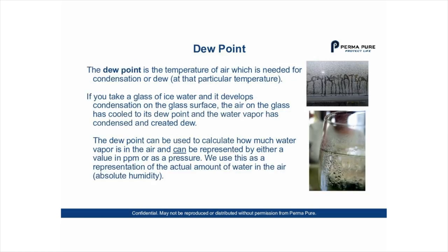The dewpoint is the temperature of air which is needed for condensation or dew at that particular temperature. If you take a glass of ice water and it develops condensation on the glass surface, the air on the glass has cooled to its dewpoint and the water vapor has condensed and created dew. The dewpoint can be used to calculate how much water vapor is in the air and can be represented by either a value in parts per million or as a pressure when using the atmospheric pressure as the standard.